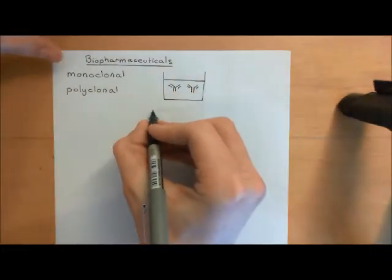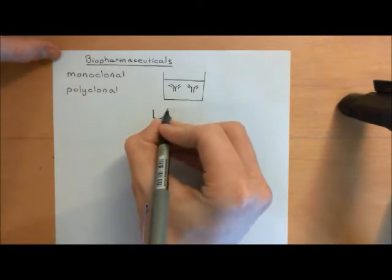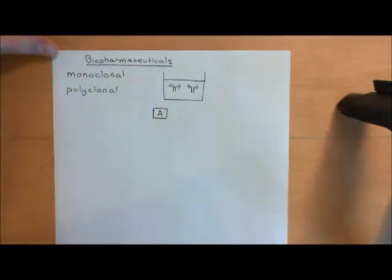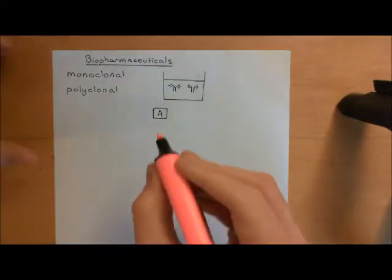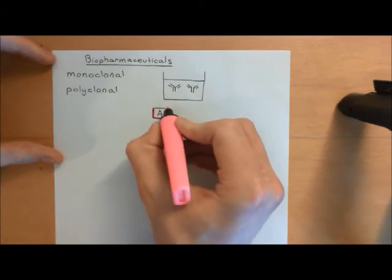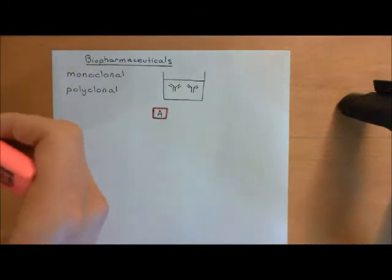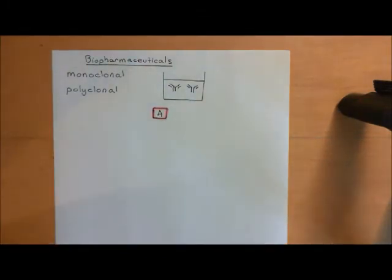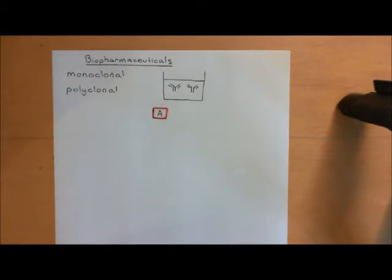Let's say you wanted to produce antibodies against a certain protein — we'll call it protein A. You want to produce antibody molecules against protein A. One way to do that is to take an experimental animal, usually a mouse, and inject protein A, which might be a human protein, into the mouse. The mouse will then initiate an adaptive immune response against protein A, and if you wait long enough, antibodies against protein A will appear in the mouse's blood.